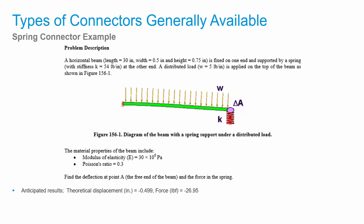As far as the problem setup, we have a horizontal beam that's 30 inches long, with a width of a half an inch and a height of three quarters of an inch. It's fixed at one end and supported at the other end with a spring that has a stiffness of 54 pounds per inch, and there is a distributed load of five pounds per inch applied along the top length of the beam. The modulus of elasticity is 30E6 and Poisson's ratio is 0.3, and the objective is to find the deflection at point A and also the force in the spring.